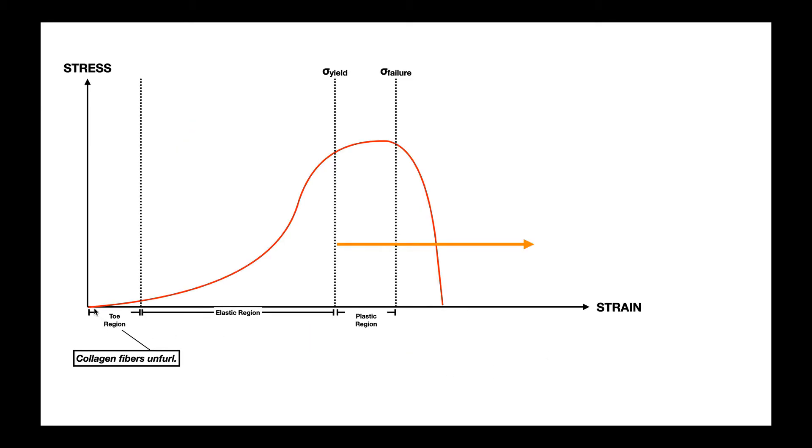And when we look at this toe region, what we see is that as we put strain on the tendon or ligament, there's really not much increase in stress. And the reason there's not much increase in stress is because those fibers haven't yet become unfurled. But once they get into that linear form, and then we start applying a stress beyond that, then we're in what's called the elastic region.